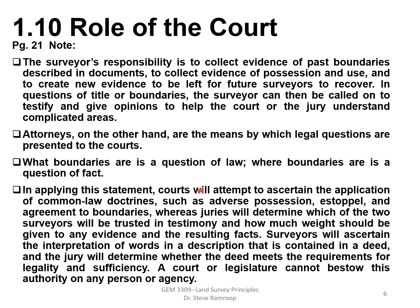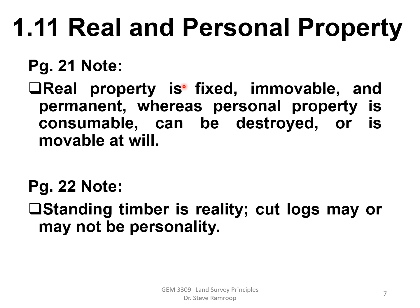The role of the court is significant and works together with testimony given by licensed surveyors. Section 1.11 covers real property. Real property is fixed, immovable, and permanent, whereas personal property is consumable — it can be destroyed or is movable at will. Real property is land with a fixed location; it doesn't go anywhere, but personal property has a different interpretation.